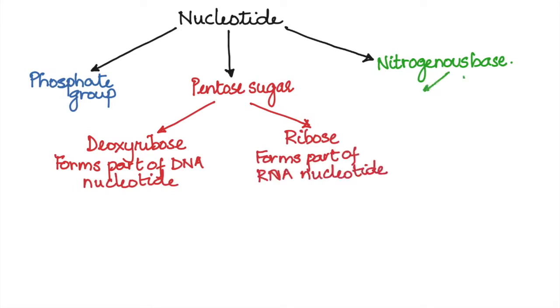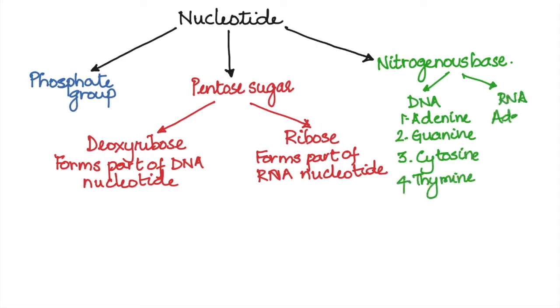Similarly, the nitrogenous bases are also of four types. Here in DNA there are adenine, guanine, cytosine and thymine, whereas in the RNA instead of thymine there is uracil.